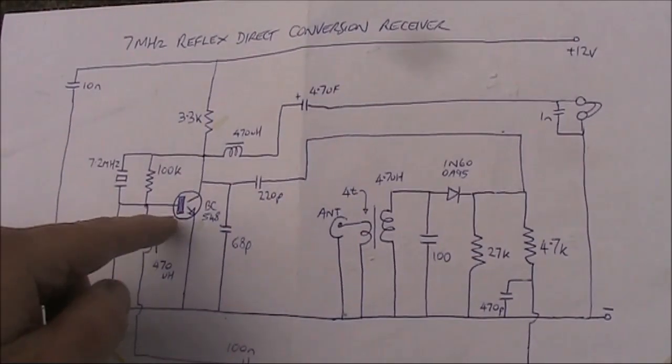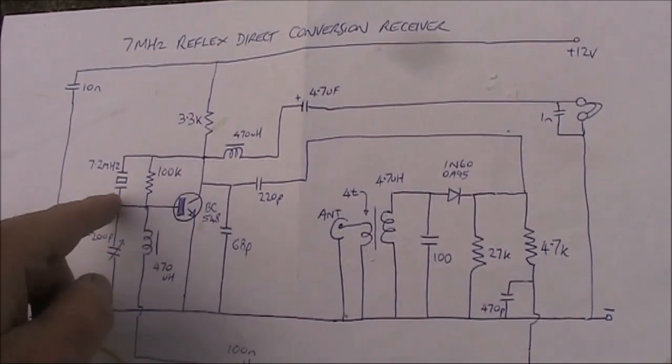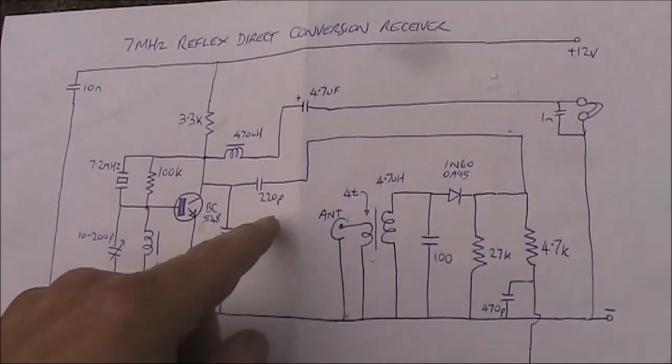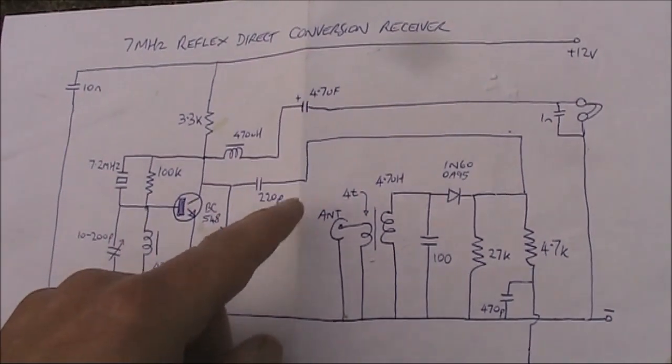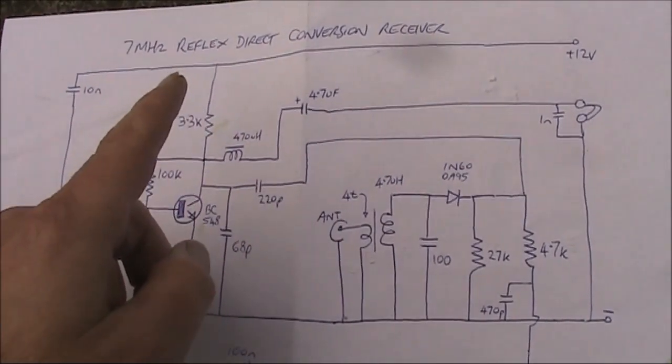For instance, you could reconfigure the circuit so that this transistor stage becomes just the local oscillator. And your second transistor could then be the one that does two things. In other words, the reflexing arrangement.